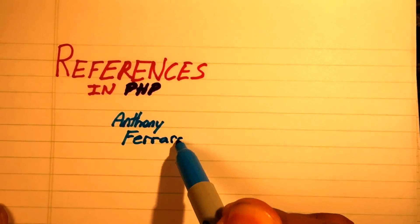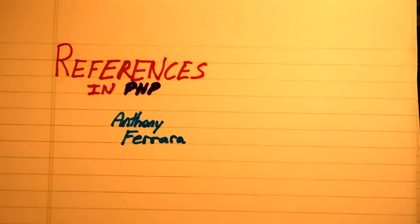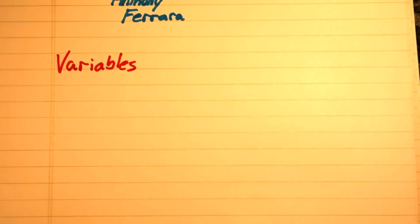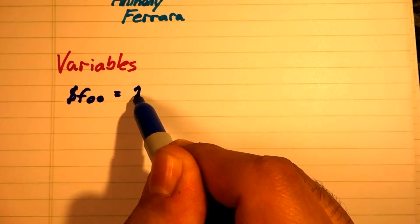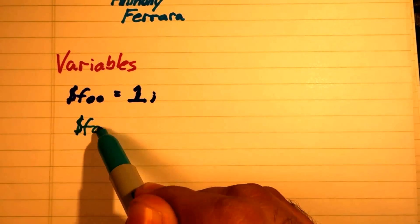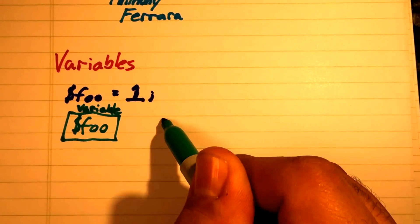To explore how references work in PHP, we need to first take a step back and look at how variables work. Typically, we think of a variable as a named container for a value.